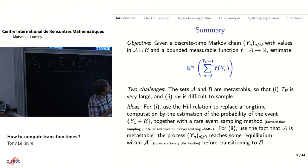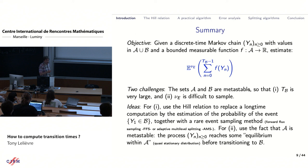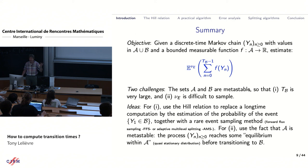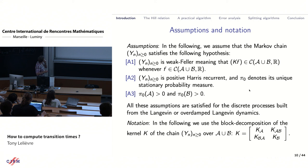As said in the introduction, there will be two ingredients in this story: one is the so-called Hill relation, which will replace this large sum by the computation of a rare event probability; and second, an algorithm to actually sample a rare event and compute its probability. Those are the two ingredients.